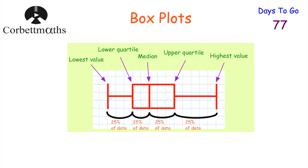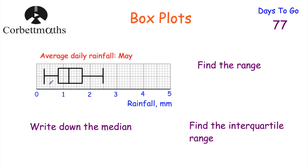Now let's have a look at a question where we're asked to read a box plot. We've got a box plot with a horizontal scale showing rainfall in millimetres going from zero to five. Remember we've got the five vertical lines: the lowest amount of rainfall, the highest amount of rainfall, the lower quartile, the median, and the upper quartile. The question says find the range, find the median, and find the interquartile range. I want you to press pause now to find those values for this box plot.